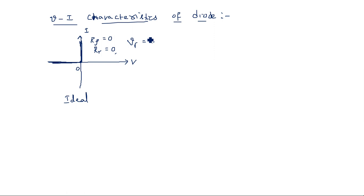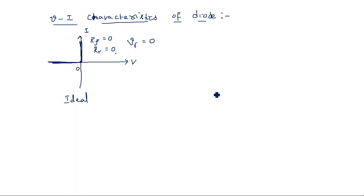Practically, V-gamma is 0.3 V for germanium and 0.7 V for silicon. You might have studied these concepts in intermediate or engineering coursework. Practically, the diode needs some minimum voltage to start conducting and allow current to flow across it. When V-gamma is finite, the characteristics shift — current starts flowing only after that finite voltage value.